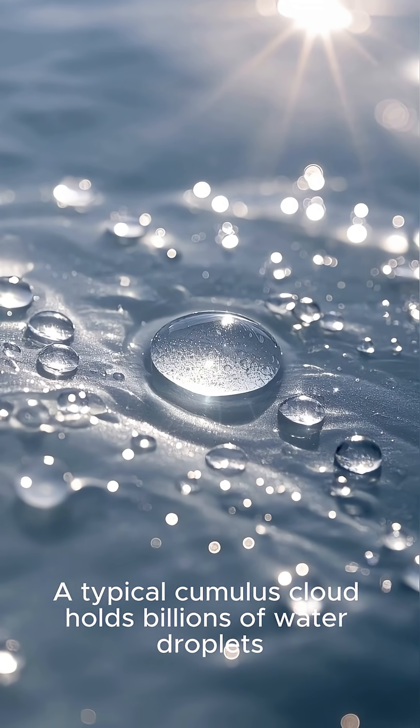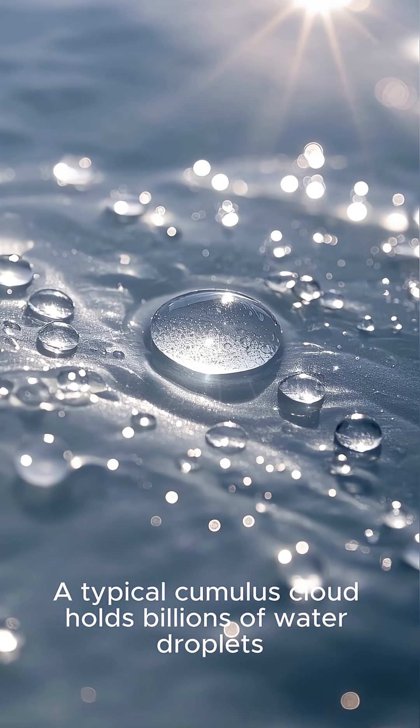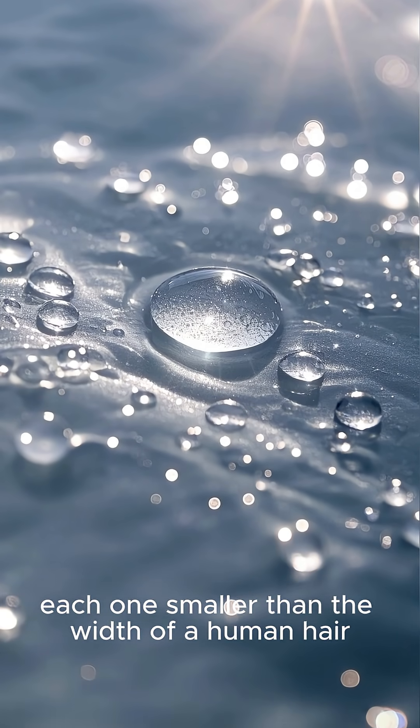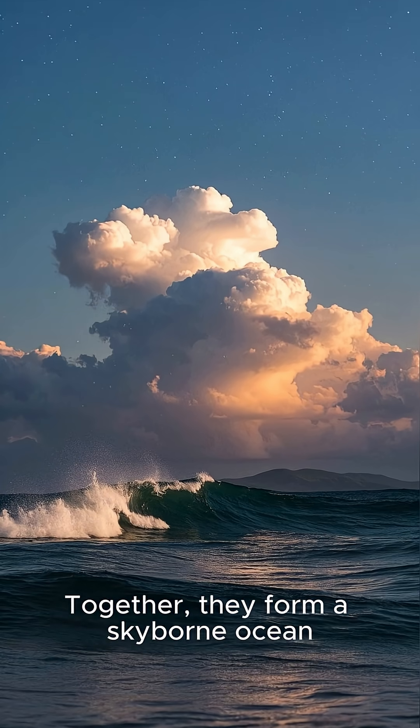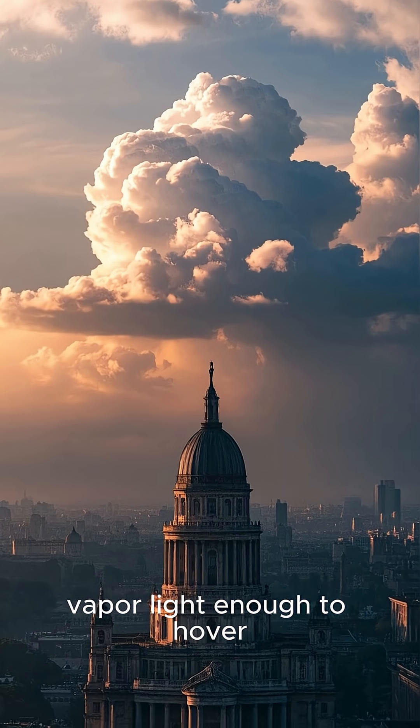A typical cumulus cloud holds billions of water droplets, each one smaller than the width of a human hair. Together they form a skyborne ocean, vapor light enough to hover yet massive enough to crush a building if it ever solidified.